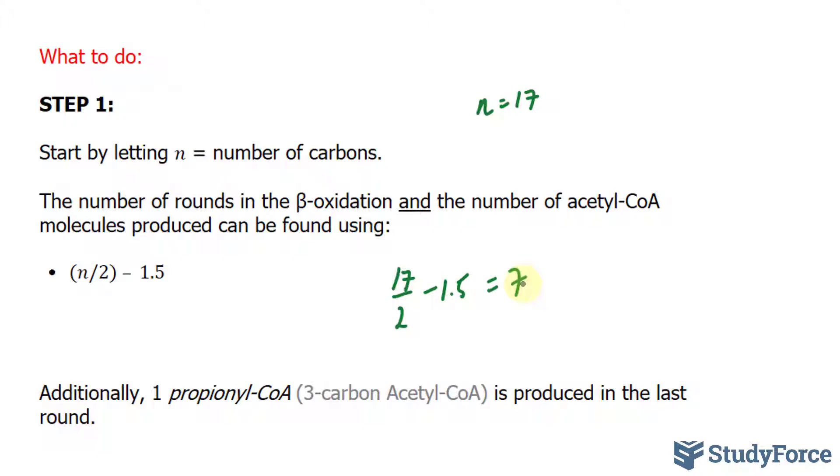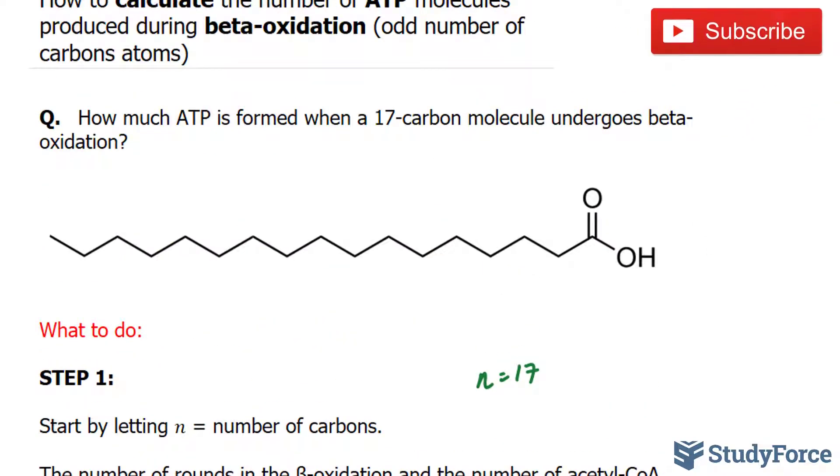This means that seven acetyl-CoA molecules are formed within seven rounds. Just to give you a visual of what's happening, for every round, two carbon atoms are cleaved.